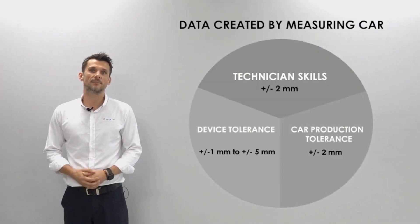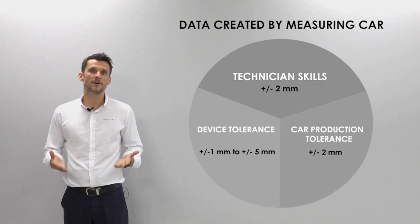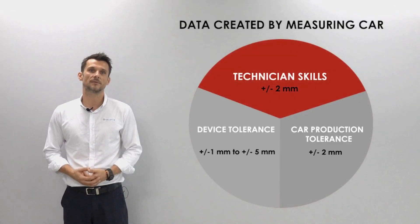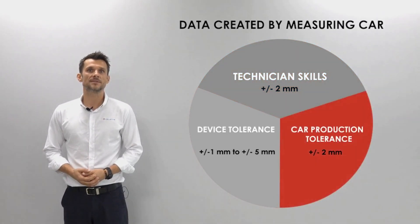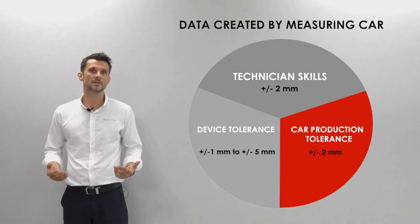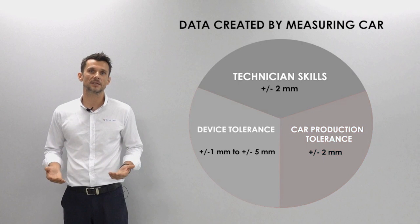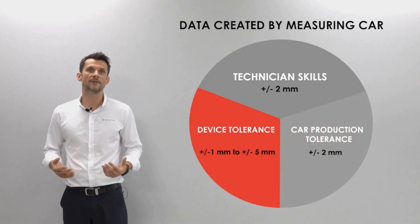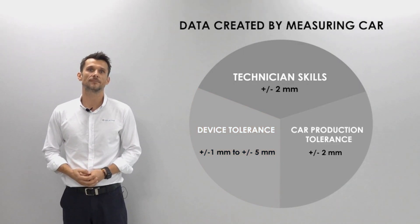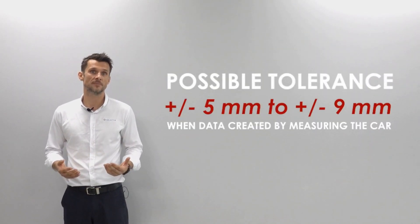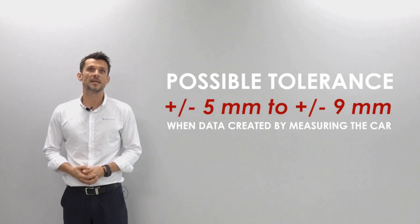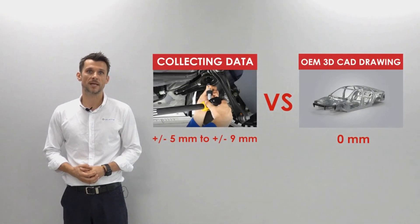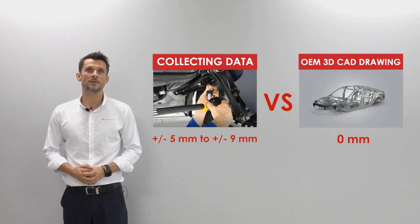As you can see on this diagram, there are three factors that can affect the tolerance. First are the skills of a technician that is measuring the car, which can differ from technician to technician based on his experience. Second, there is some deviation on the car itself — as we know, all cars are a bit different even right away from the production line. Third, it is the tolerance of the device that is used for creating the data by measuring the car. When we put all of these tolerances together, we get a number of plus or minus five to nine millimeters of possible tolerance. So even before working with a measuring system in your body shop, the difference can be five to nine millimeters, compared to data created using 3D CAD drawings where the tolerance is zero.